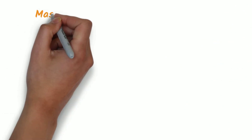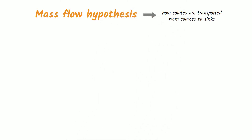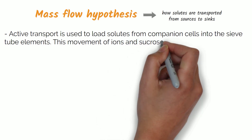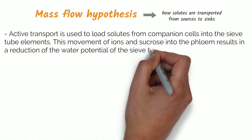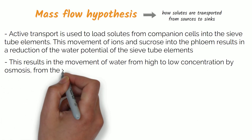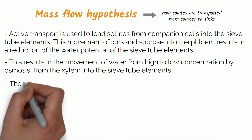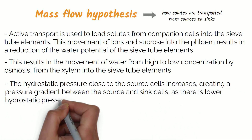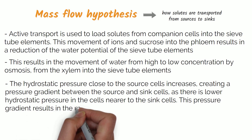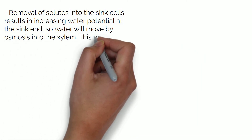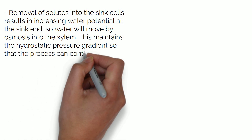The mass flow hypothesis is the most widely accepted theory for how solutes are transported from sources to sinks. Active transport is used to load solutes from companion cells into the sieve tube elements. This movement of ions and sucrose into the phloem reduces the water potential of the sieve tube elements, resulting in movement of water from high to low concentration by osmosis. This results in an increase in hydrostatic pressure close to the source cells, creating a pressure gradient between the source and sink cells, as there is lower hydrostatic pressure in the cells nearer to the sink. This pressure gradient results in the movement of solutes down the pressure gradient to the sink cells. Removal of solutes into sink cells increases water potential at the sink end, so water moves by osmosis into the xylem, maintaining the hydrostatic pressure gradient so that the process can continue.